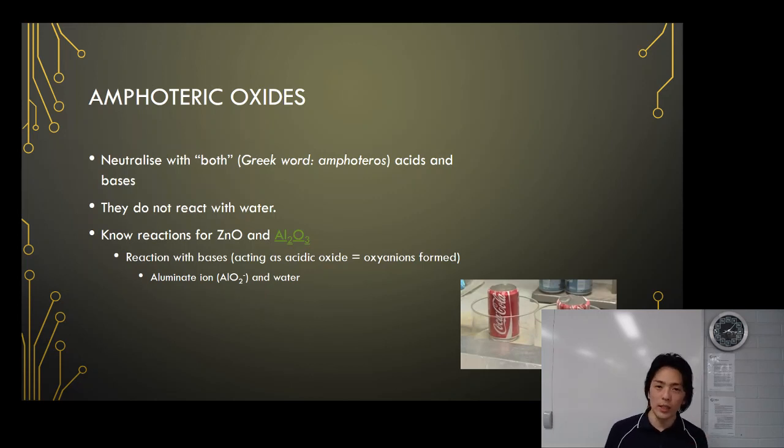If it's zinc oxide reacting with strong base, it neutralizes the base. Therefore, you get water as well as zincate ion, which is ZnO2 2-minus.